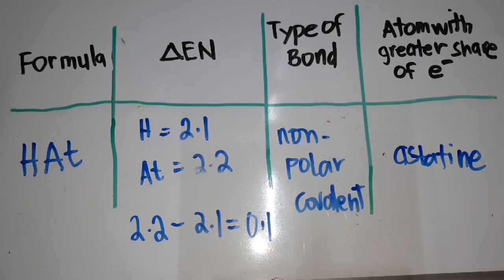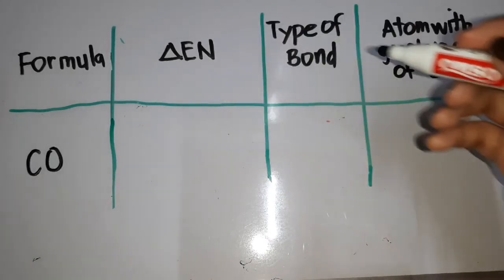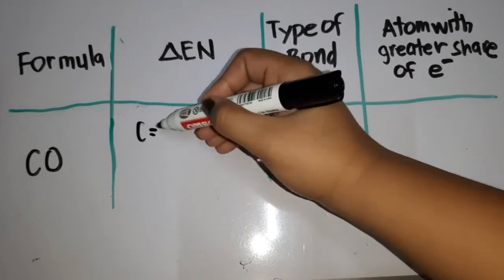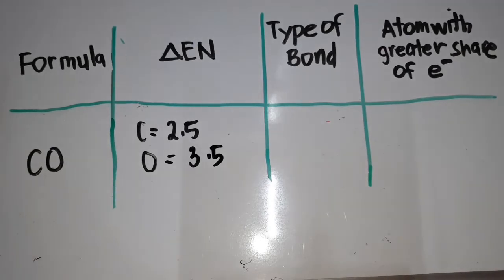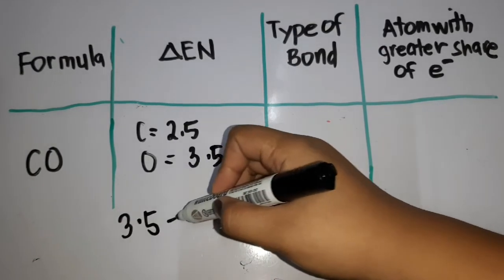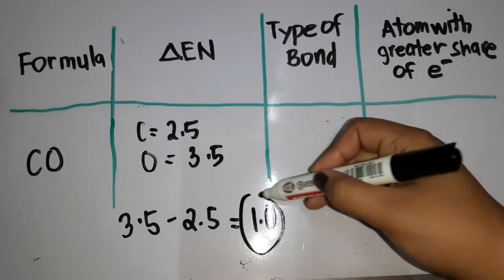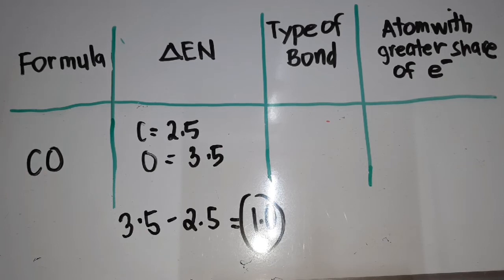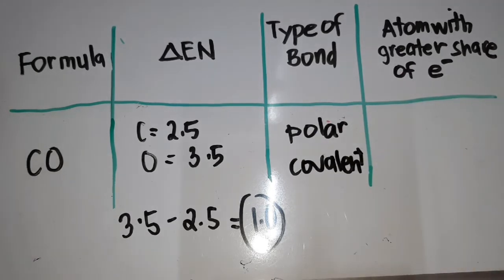That's how we find and solve the electronegativity difference. Another example: carbon and oxygen. Carbon has an electronegativity of 2.5 and oxygen is 3.5. The solution is 3.5 minus 2.5, giving an electronegativity difference of 1.0. Since 1.0 is between 0.5 and 1.7, it is considered a polar covalent bond, and the element with the greater share of electrons is oxygen.